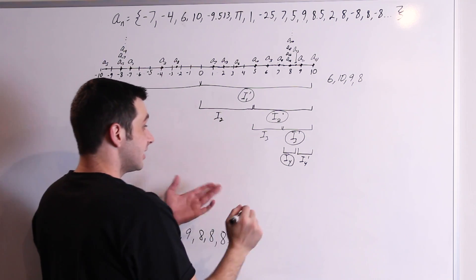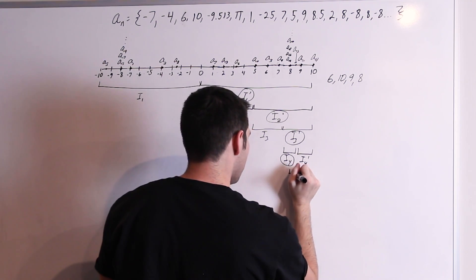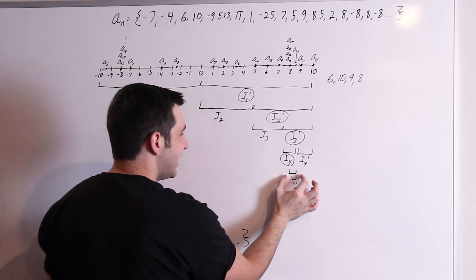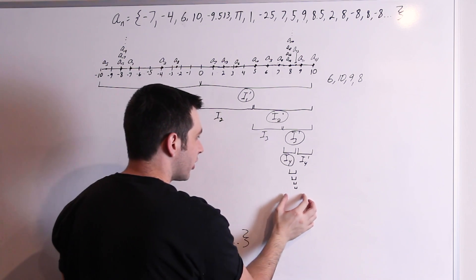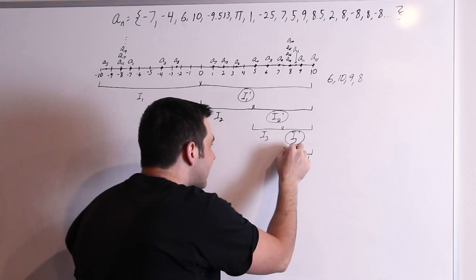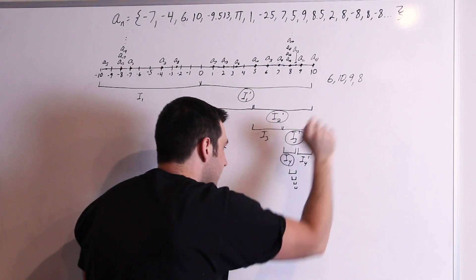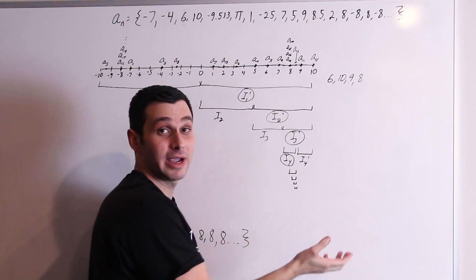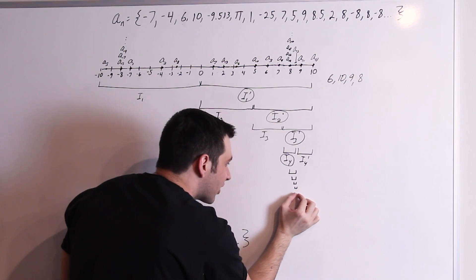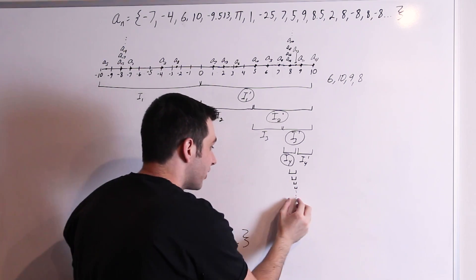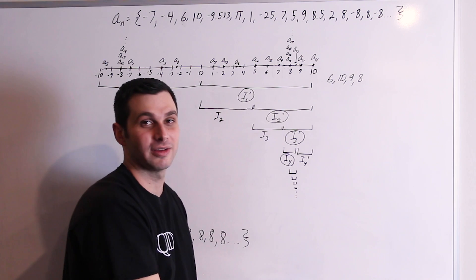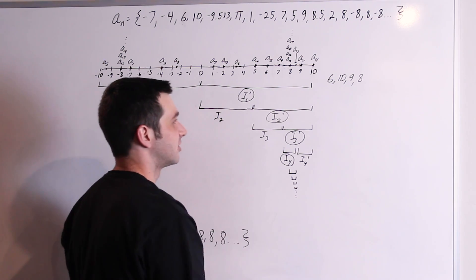And then this continues forever. Think about what that means. I can keep making these nested intervals that are getting smaller and smaller, but every single time they contain infinitely many terms. So as I keep picking a number, putting it in, picking a number, I have infinitely many to choose from, so I'll always have options. Those numbers I'm picking are getting infinitely close to one another forever. So as they get infinitely close, that means they must approach something. In this case it's 8, but guaranteed they must approach something.